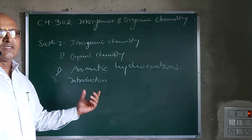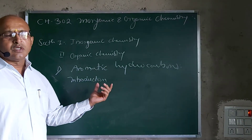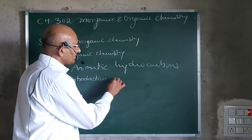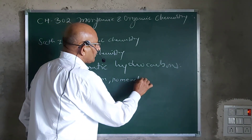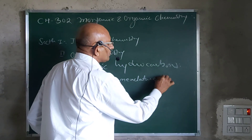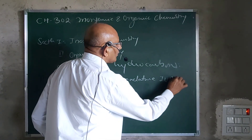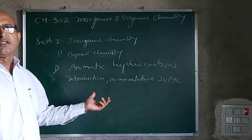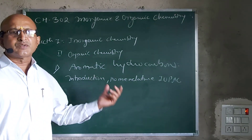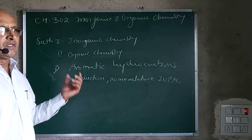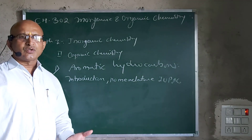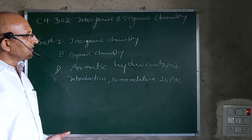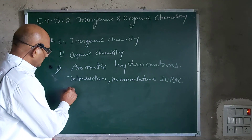After the introduction, we are going to deal with the nomenclature, and this nomenclature will be studied according to the International Union of Pure and Applied Chemistry (IUPAC). The different aromatic compounds, or substituted aromatic compounds — that will be monosubstituted, disubstituted, or trisubstituted — how you are going to name the compounds and what is the standard method, we are going to learn. Then we will learn the preparations.